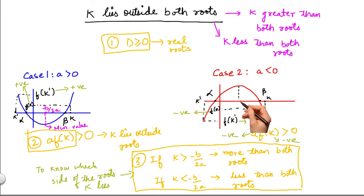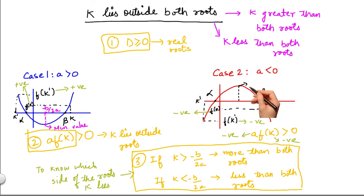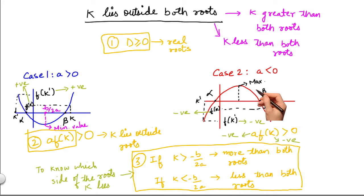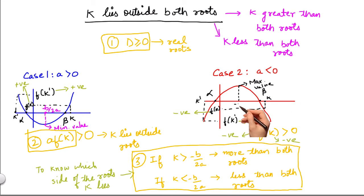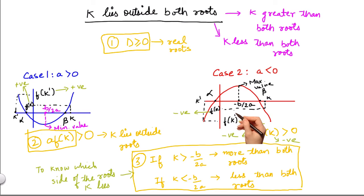So our conditions remain the same. The difference in this case is that we compare k to the value of x at which the function takes the maximum value — instead of the minimum — which is again minus b by 2a. So the three conditions in this scenario are the same as when a was greater than 0.